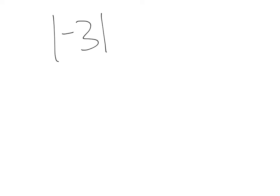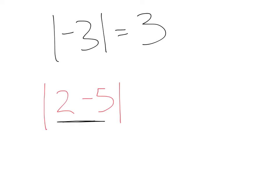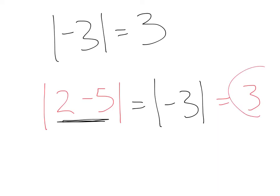For example, if we had absolute value of negative three, that would equal positive three, because negative three is three spaces from zero. Let's say we had absolute value of two minus five. We could simplify two minus five into negative three. That would give us an absolute value of negative three, which overall would give us positive three.